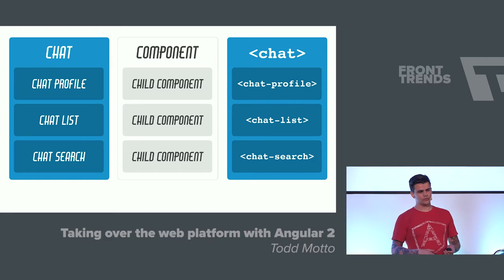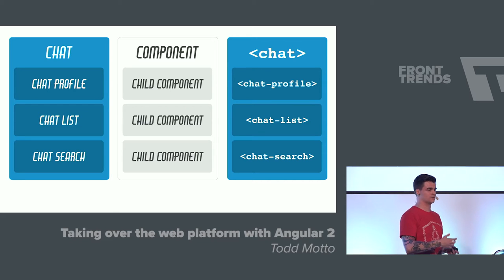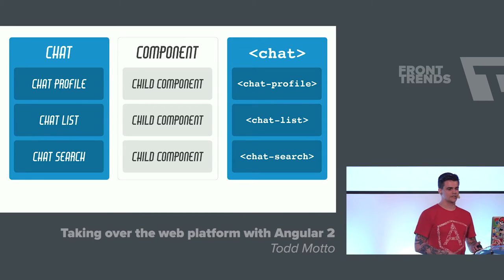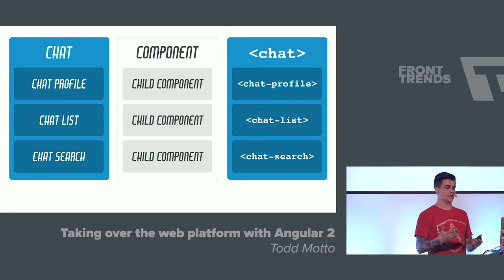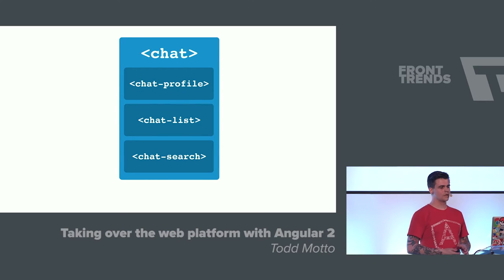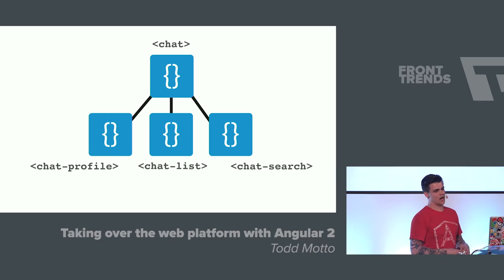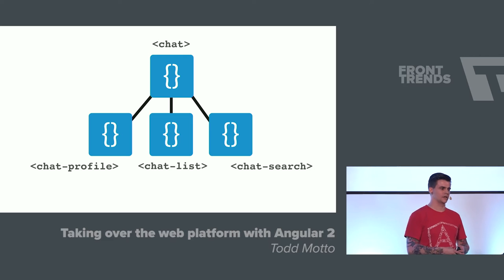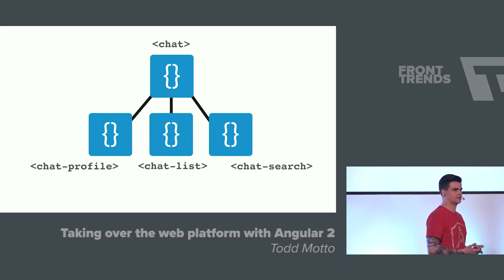This might look super easy, but when you start to build with Angular — even in Angular 1, or any other framework — component architecture is not tied to a framework. We can start to think about these as high-level elements, and then go down further. The arrows coming off chat-profile, chat-list, and chat-search indicate data flow being passed down.